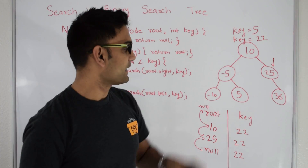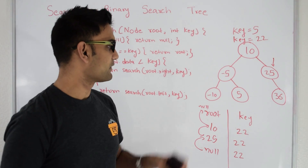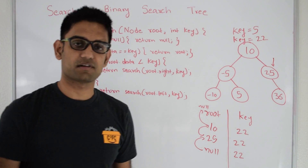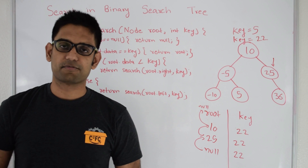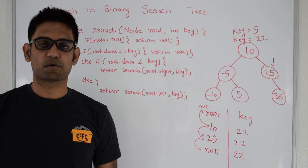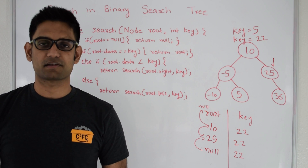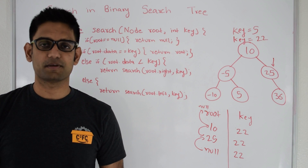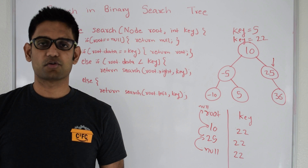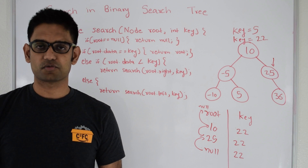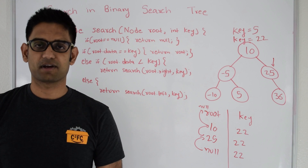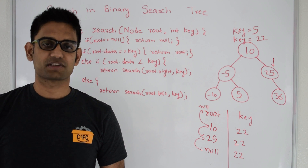So if the key existed it returned the node — like 5. If the key did not exist, like 22, it returned null. If you want the full code for this problem go to my GitHub at github.com/mission-peace/interview-wiki. And if you want to check out similar questions go to my YouTube channel at youtube.com/user/tusharai2525. Thanks for watching this video.